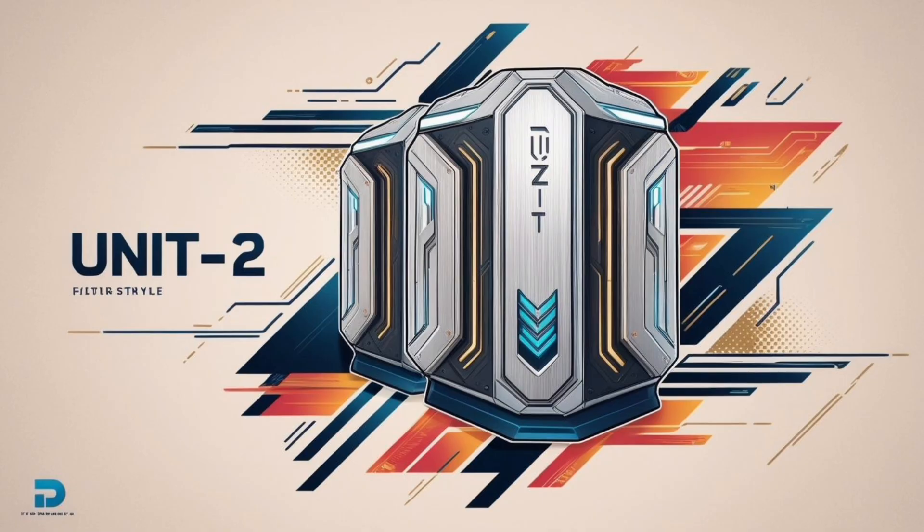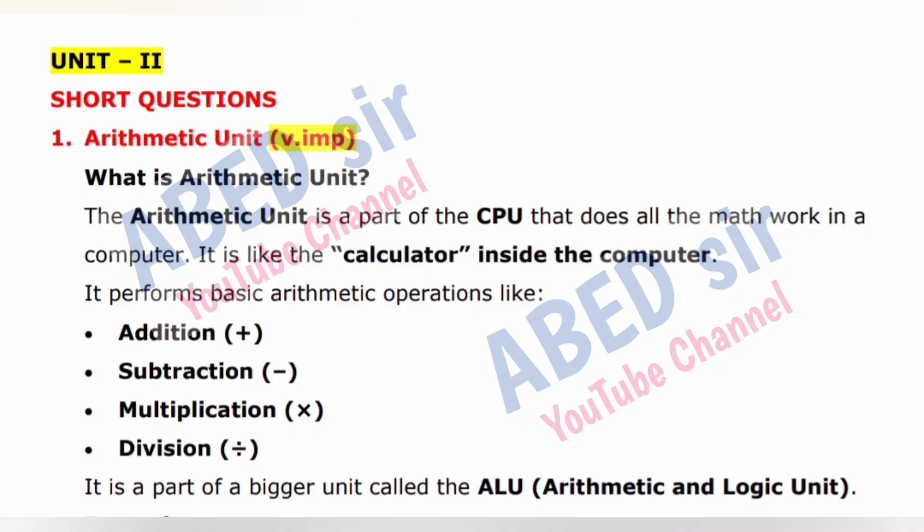Unit 2. The important short question is: What is the Arithmetic Unit? The Arithmetic Unit is a part of the CPU that does all the math work in a computer. It is like the calculator inside the computer. It performs basic arithmetic operations like Addition, Subtraction, Multiplication, Division. It is a part of a bigger unit called the ALU, Arithmetic and Logic Unit.